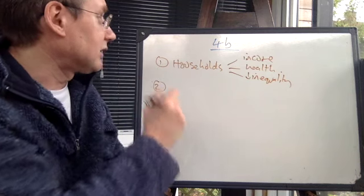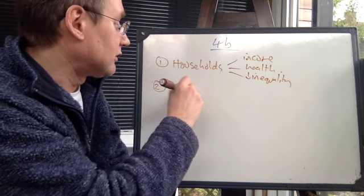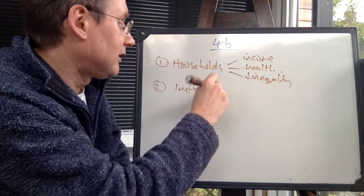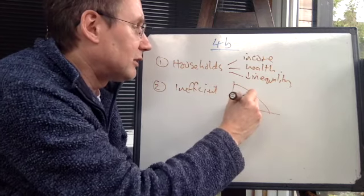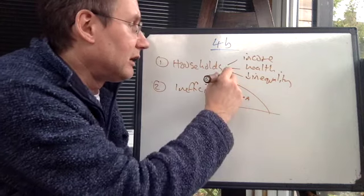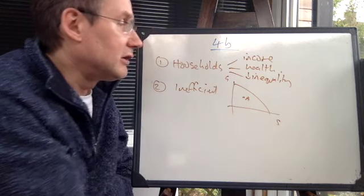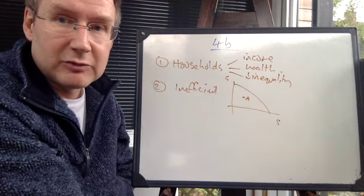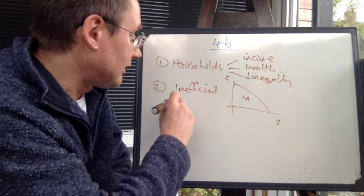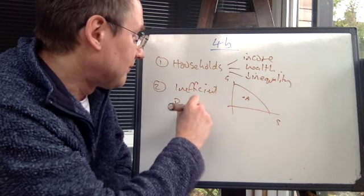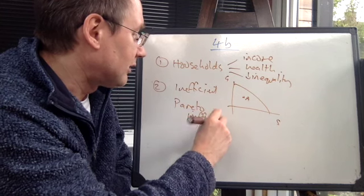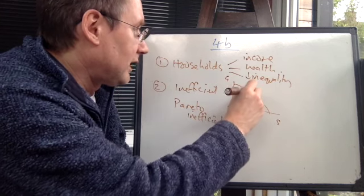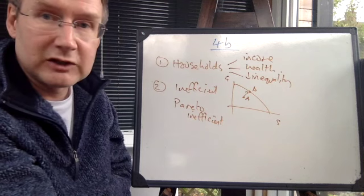Secondly, we can argue that unemployment is inefficient. So getting rid of it is probably good. We know that unemployment, assuming it's some sort of cyclical unemployment, means that if we've got goods and services, it means that the economy is operating inside its production possibility frontier. It is Pareto inefficient. And therefore, again, if you can get rid of that unemployment by stimulating aggregate demand, then you're going to make better use of society's resources.